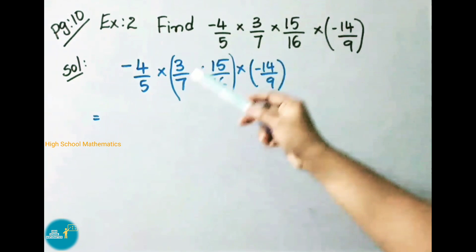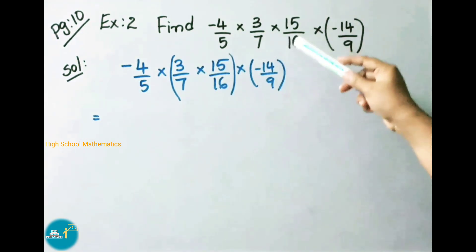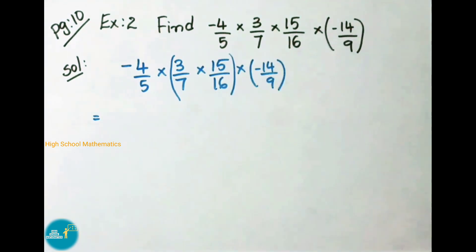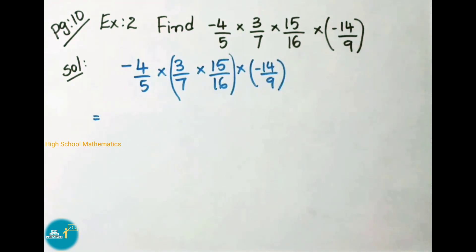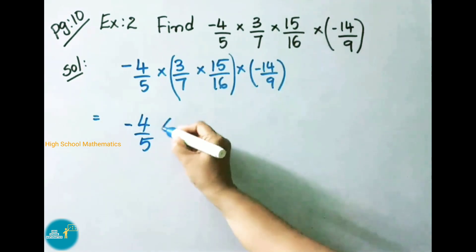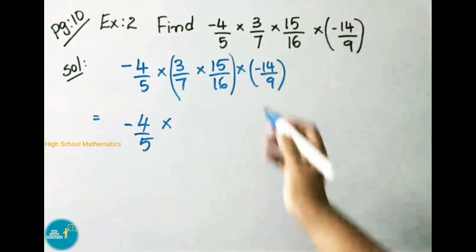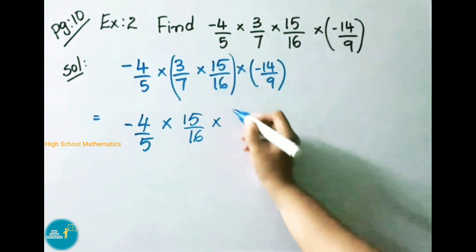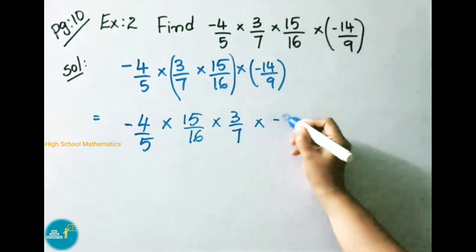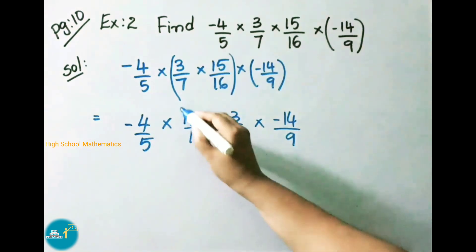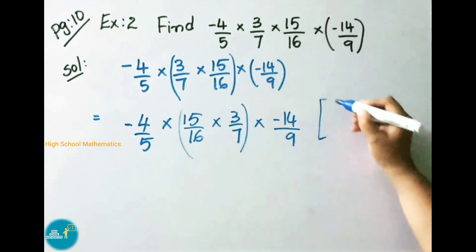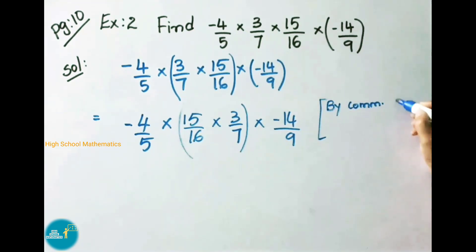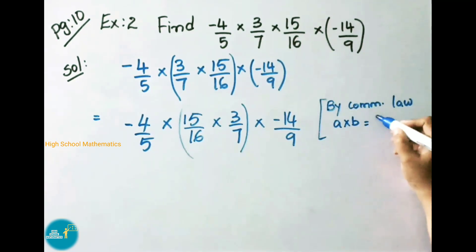See now page number 10, Example 2. Find minus 4 by 5 into 3 by 7 into 15 by 16 into minus 14 by 9. Let us see the solution. If we observe the middle two values, we are going to apply commutative property. That is A into B can be written as B into A. So we write: minus 4 by 5 into 15 by 16 into 3 by 7 into minus 14 by 9. Here we apply commutative property: A into B can be written as B into A.